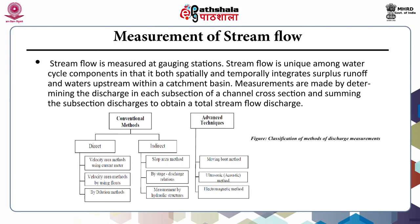Stream flow is measured at gaging stations. Stream flow is unique among water cycle components in that it both spatially and temporally integrates surplus runoff and water upstream within a catchment basin. Measurements are made by determining the discharge in each subsection of a channel cross section and summing the subsection discharges to obtain a total stream flow discharge. Conventional methods are divided into direct and indirect methods. Direct methods include velocity-area methods using the current meter, velocity-area methods using floats, and dilution methods. Indirect methods include slope-area method, stage-discharge relations, and measurement by hydraulic structures. Advanced techniques include the moving boat method, ultrasonic or acoustic method, and the electromagnetic method.